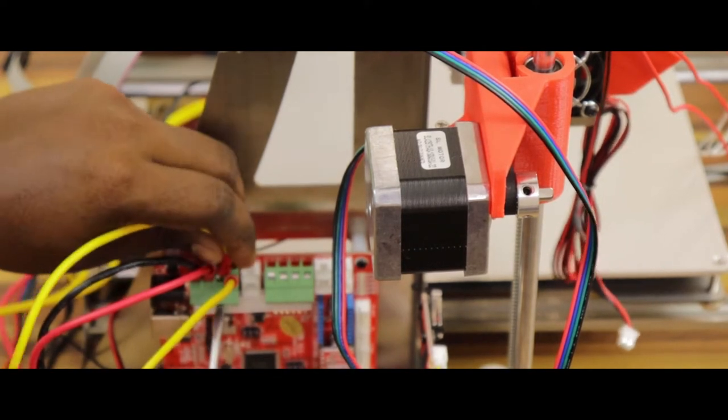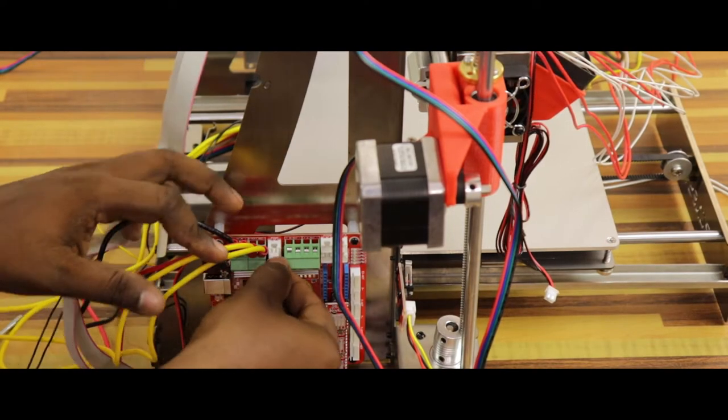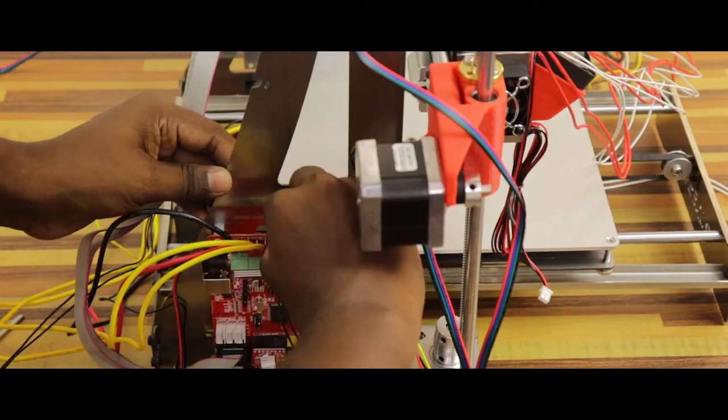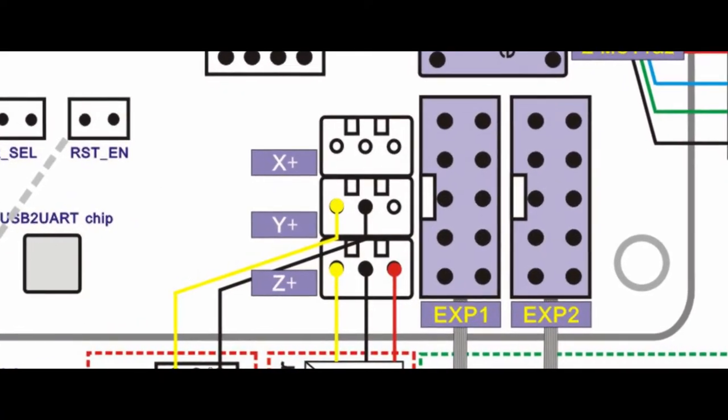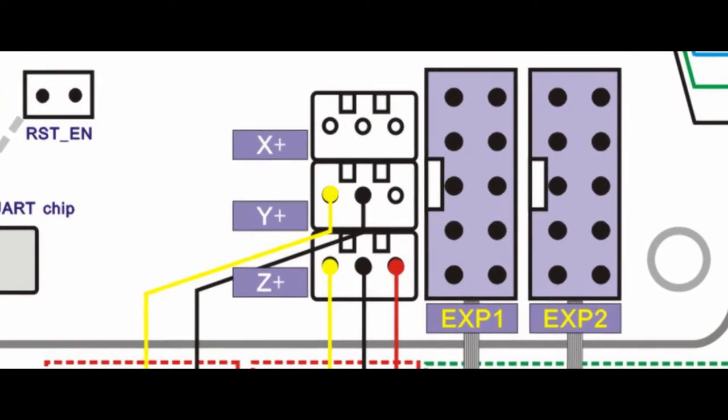We can connect the extruder temperature sensor just near the heat bed socket. The LCD controller cables can be attached to the controller board using the EXP1 and EXP2 connectors.